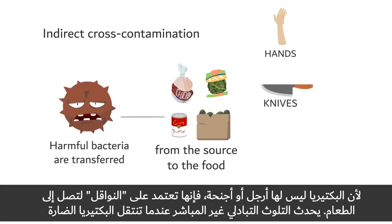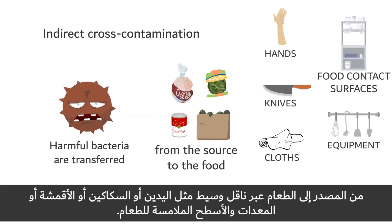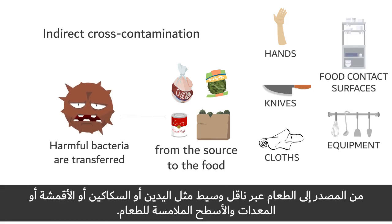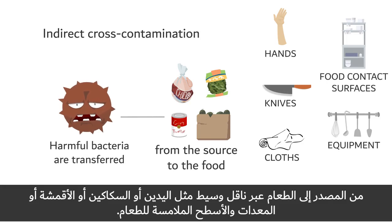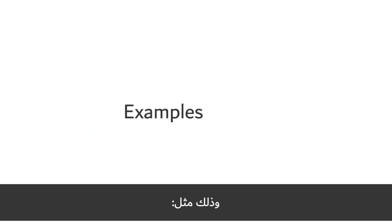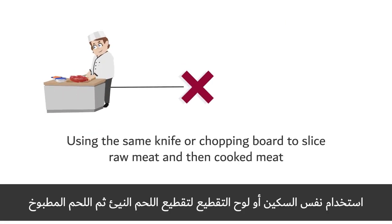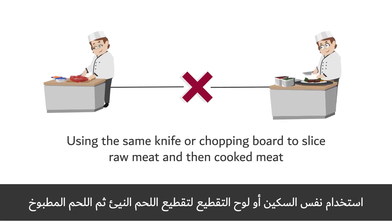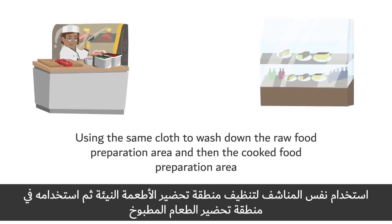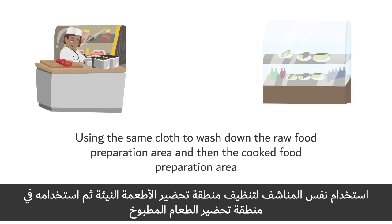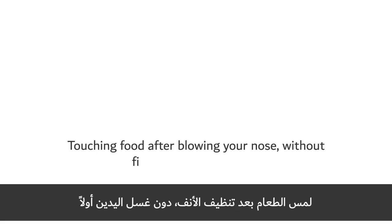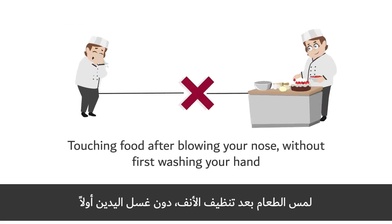Indirect cross-contamination occurs when harmful bacteria are transferred from the source to the food via a vehicle such as hands, knives, cloths, equipment, and food contact surfaces. Examples include using the same knife or chopping board to slice raw meat and then cooked meat, using the same cloth to wash down the raw food preparation area and then the cooked food preparation area, or touching food after blowing your nose without first washing your hands.